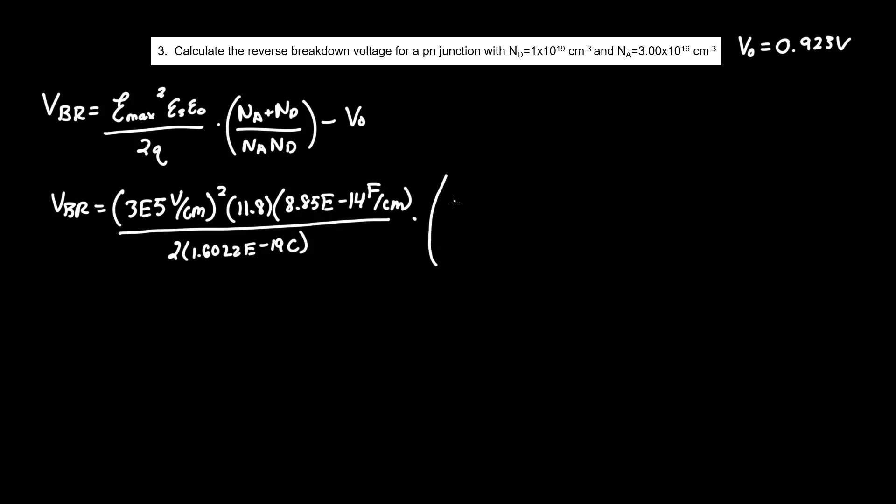Times 8.85E-14 farad per centimeter over 2 times 1.6022E-19 coulombs times NA, which was given to be 3E16 per centimeter cubed plus ND, which was 1E19 per centimeter cubed over the product between the two.